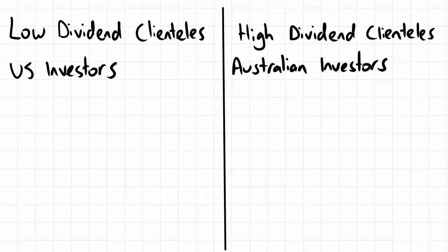Under high dividend clienteles, you could also see fund managers. Fund managers invest on behalf of members and typically have restrictions on what they can pay back. The assets they hold in members' names are split into two categories: principal and income. Principal is all the assets held to generate revenue, and income is of course that revenue being generated. If they hold shares that pay dividends, dividends are classified as income and can be paid back to the members.